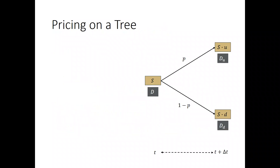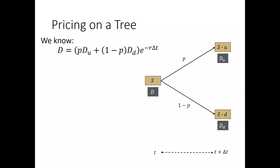We summarize as follows: given our tree, we know the values on the right-hand side — d sub u and d sub d. We can calculate the probability p, and we know d equals p times d sub u plus 1 minus p times d sub d, all discounted at the risk-free rate, e to the minus r delta t.